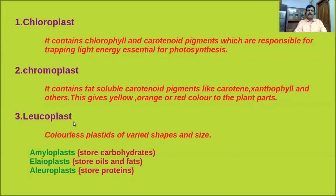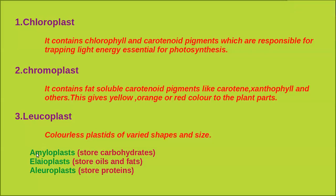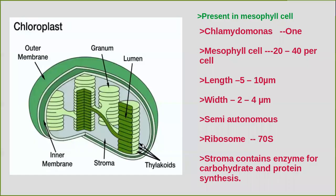The third type of plastid is leucoplasts — colorless plastids of varied shapes and sizes with storage functions. Based on the substances stored, leucoplasts are classified into three types: amyloplasts, which store carbohydrates; lioplasts, which store oils and fats; and alluoplasts, which store proteins.